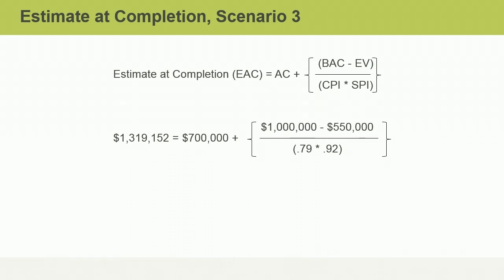Scenario three is the most complex scenario. You will pull the actual costs aside and add them to the following quotient. In the numerator, you will use the original BAC minus the earned value — another way of saying the work remaining in the project. In the denominator, you will multiply the SPI times the CPI, which represents the overall work performance to date. Once you solve for the quotient and add the actual costs, you will get the new EAC.